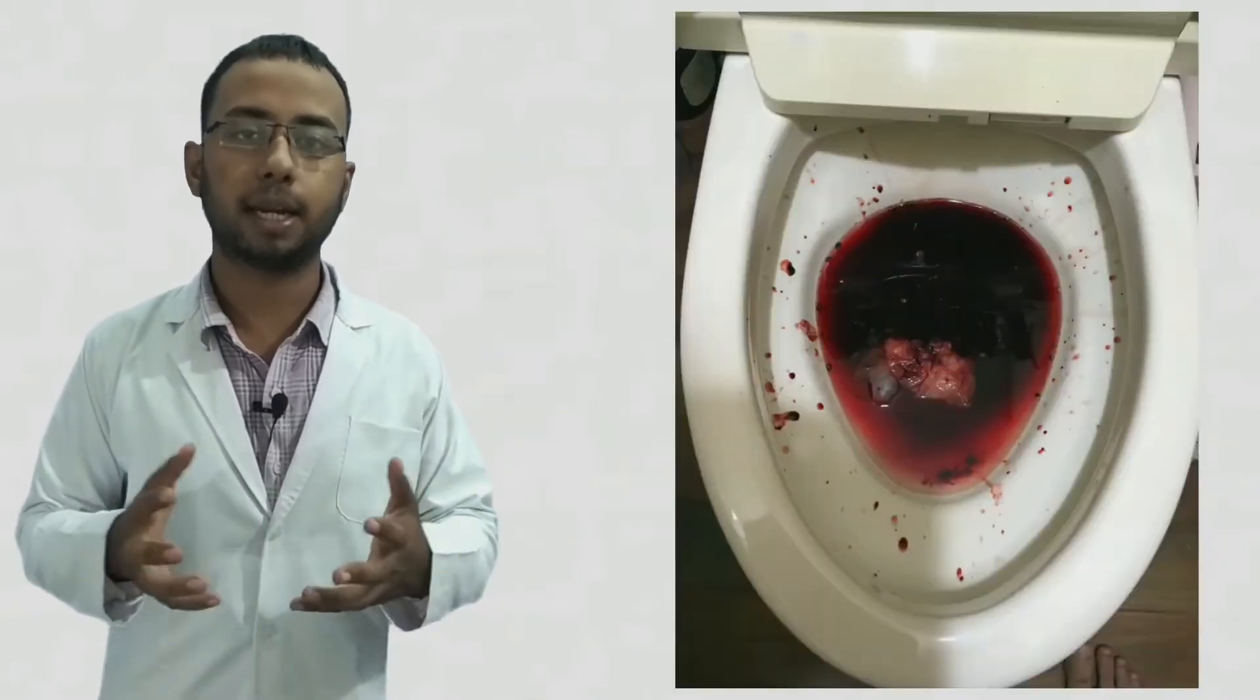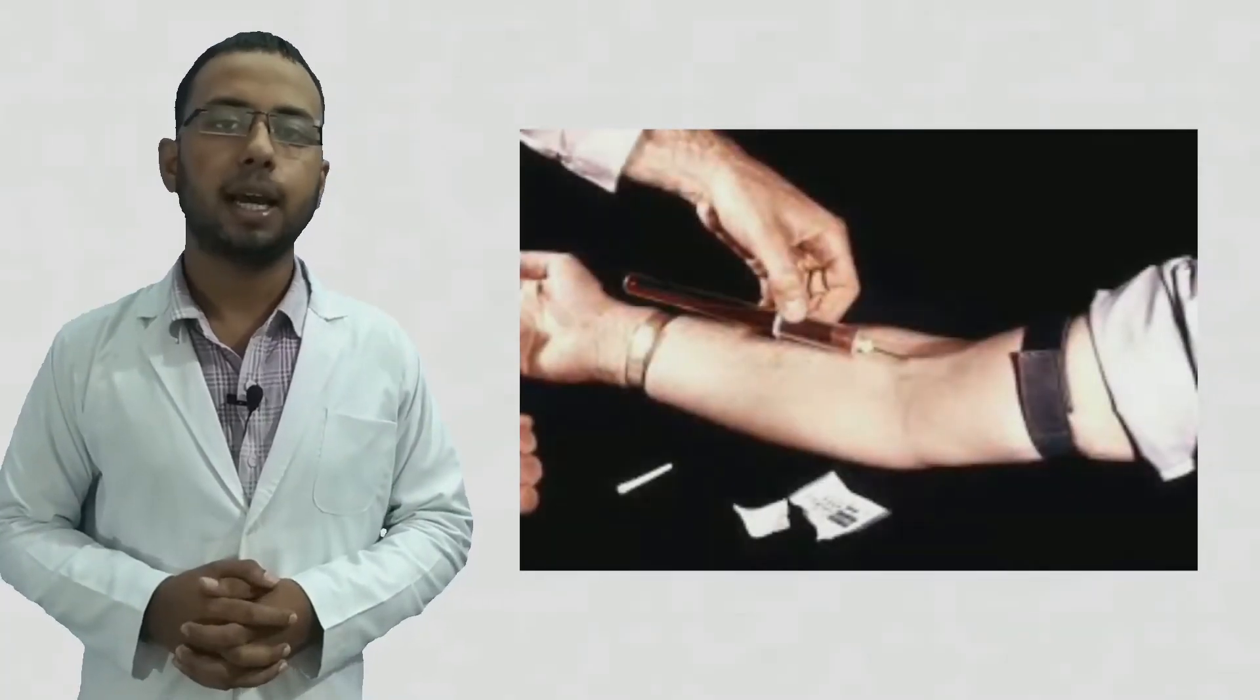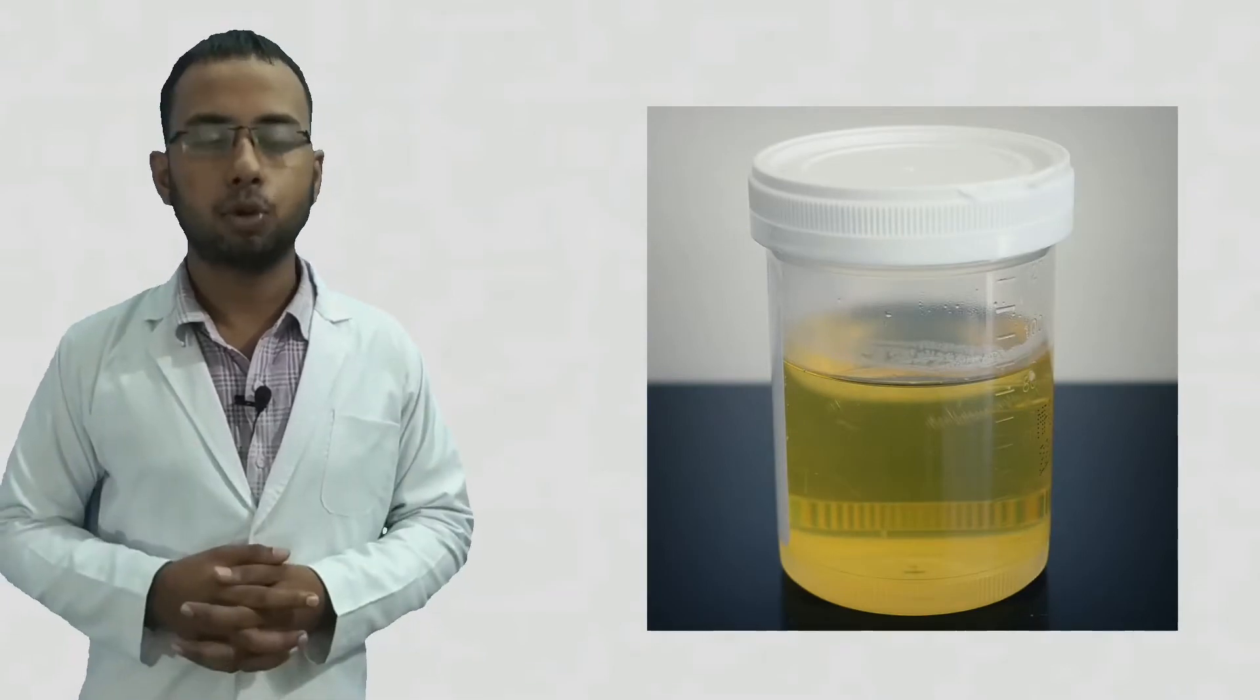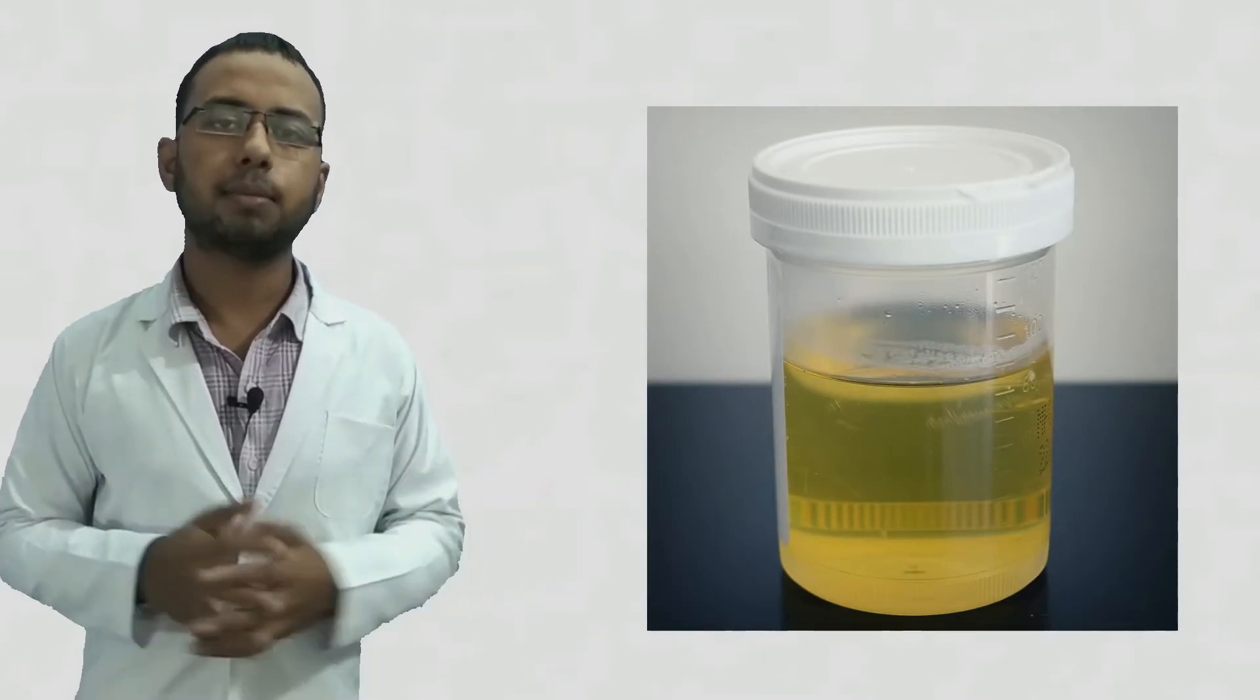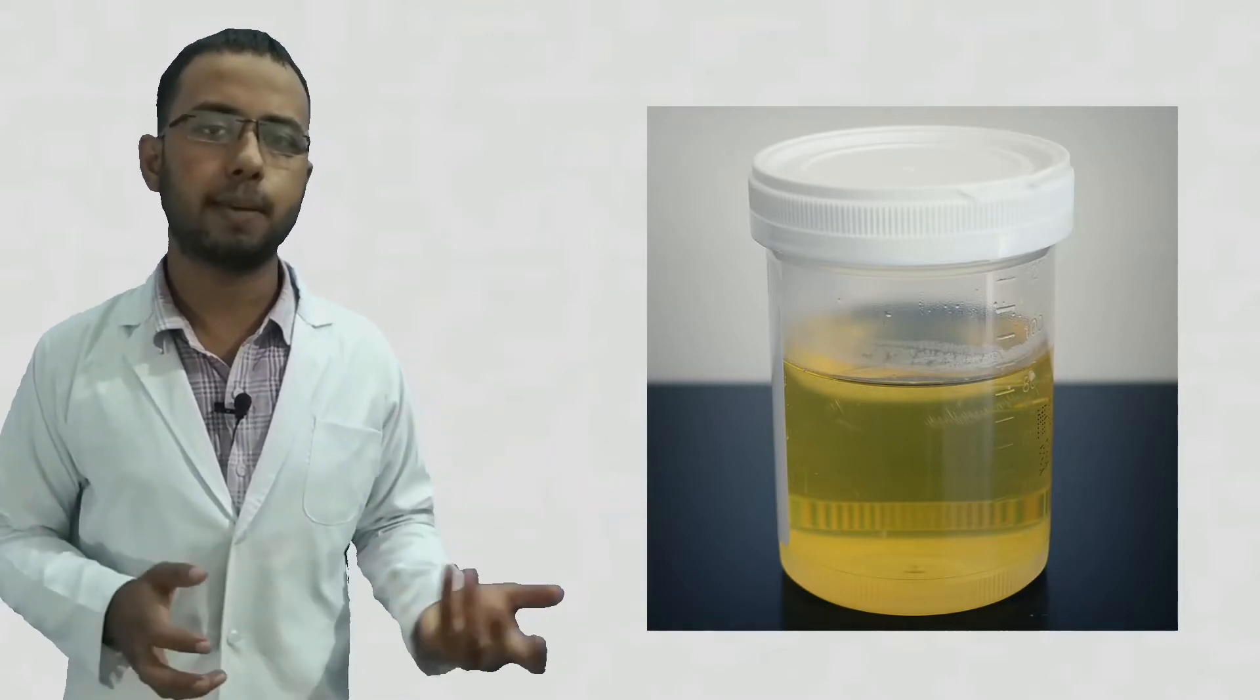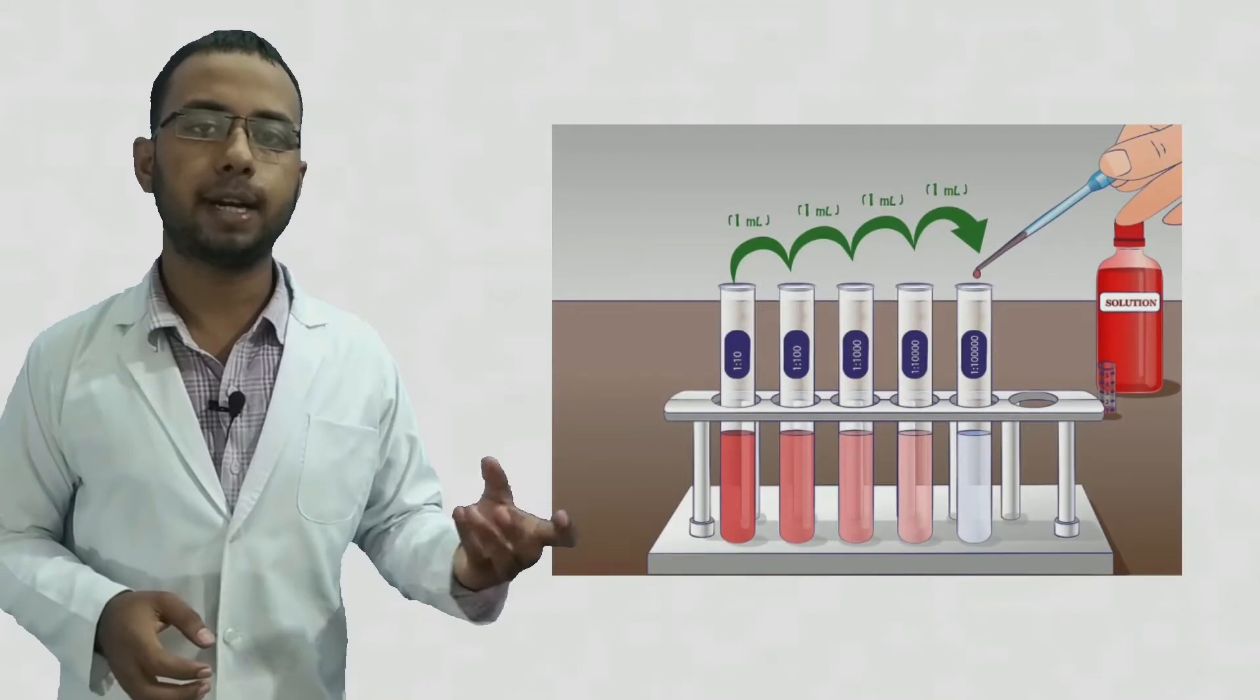Diagnosis of typhoid is done by checking the presence of Salmonella typhi in our blood, urine sample, stool, or even bone marrow. This checking is done by collecting the blood, urine or stool sample and making a serial dilution of it.